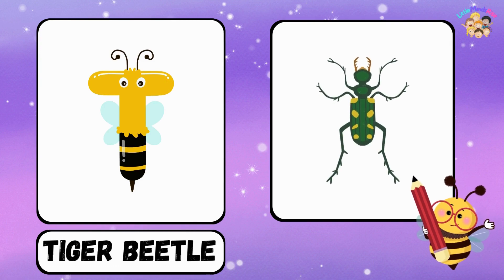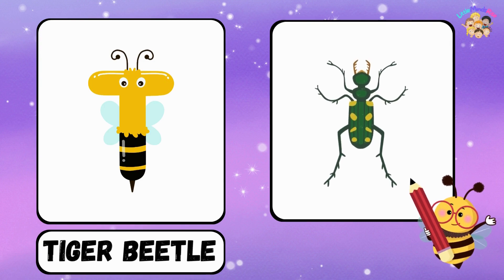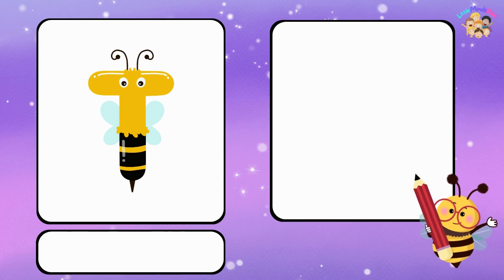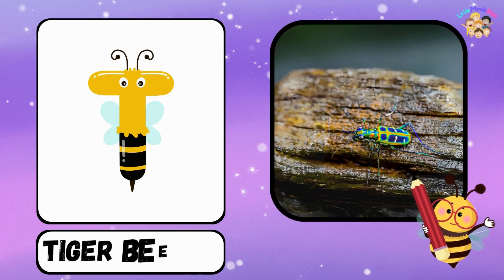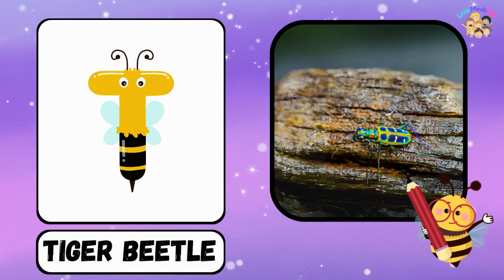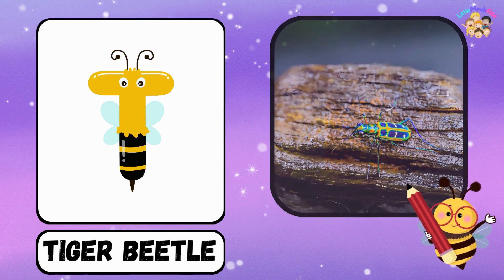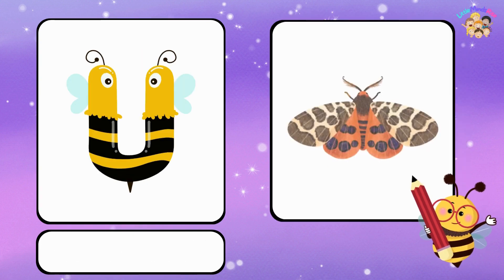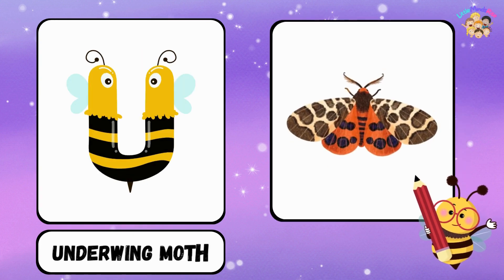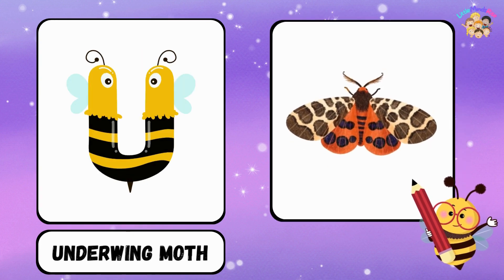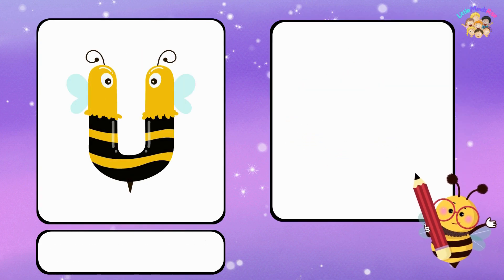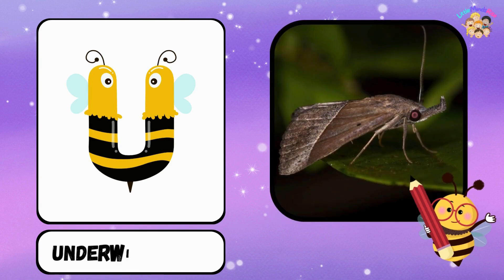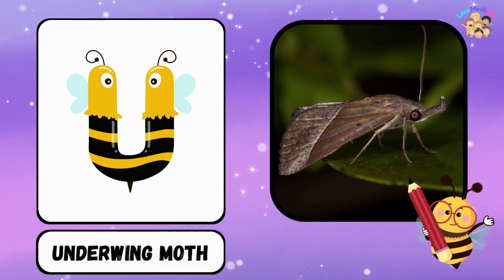T for Tiger Beetle. U for Underwing Moth.